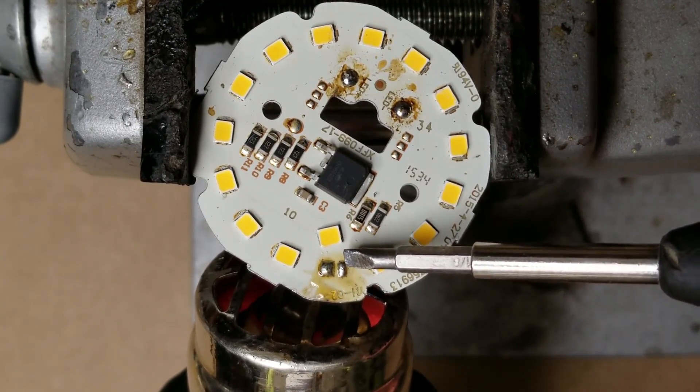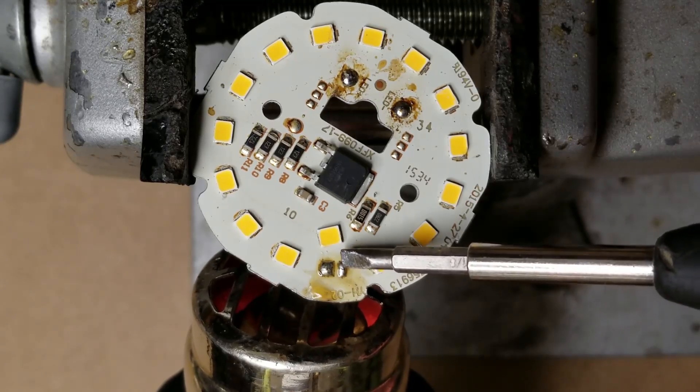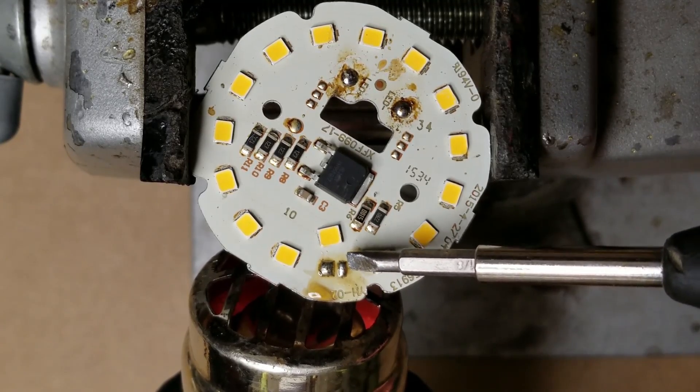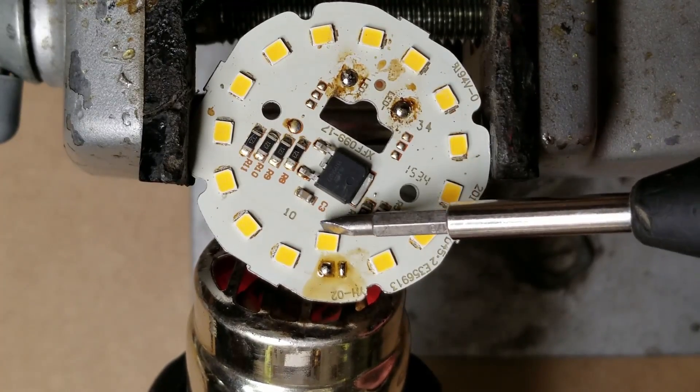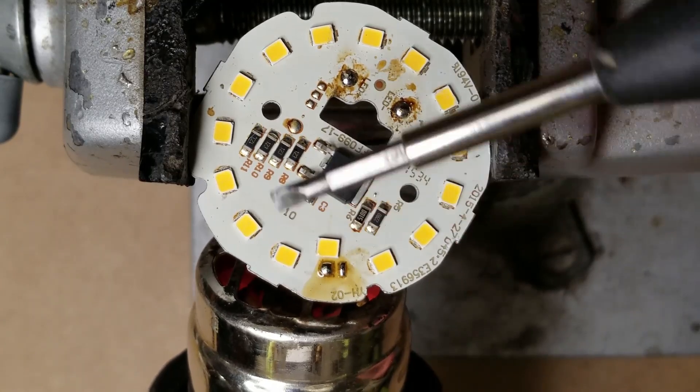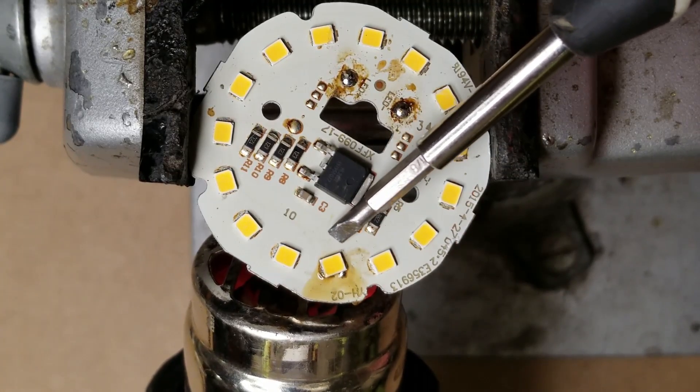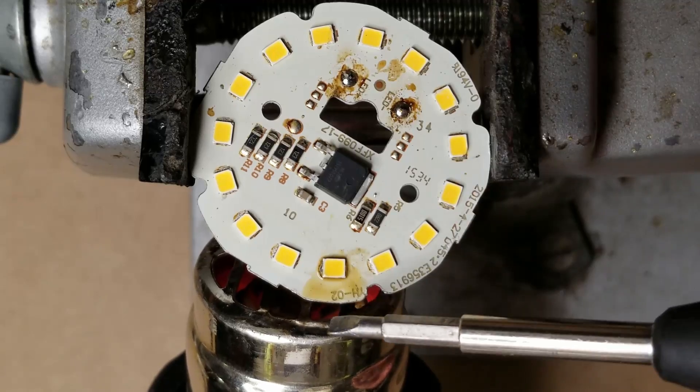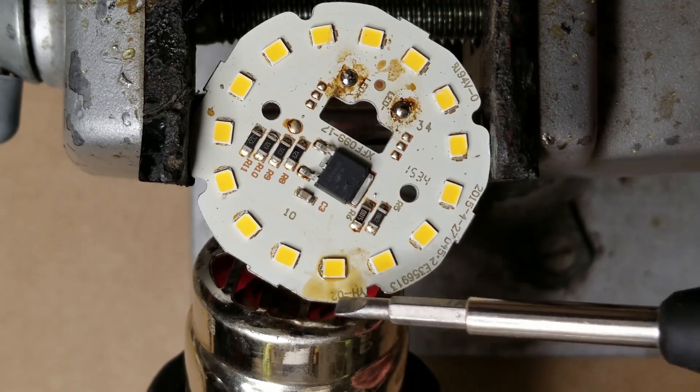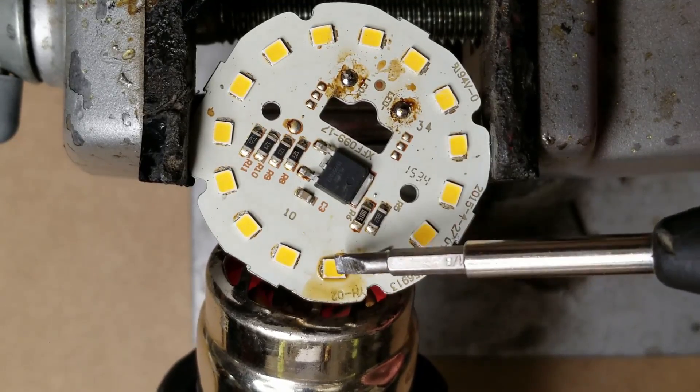Hit it with the heat gun again. Once the solder becomes molten then I'll just edge the new LED into place. There it took it. It's on there very nicely.